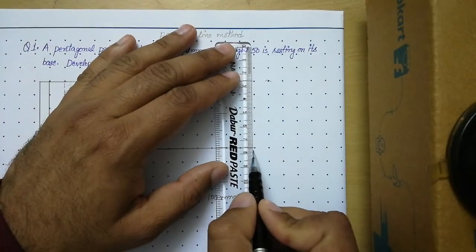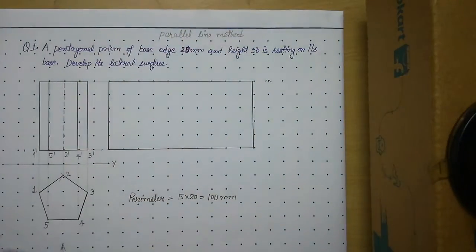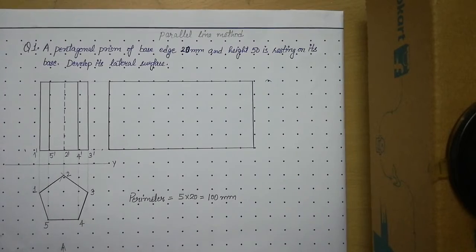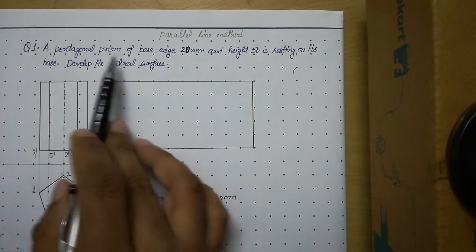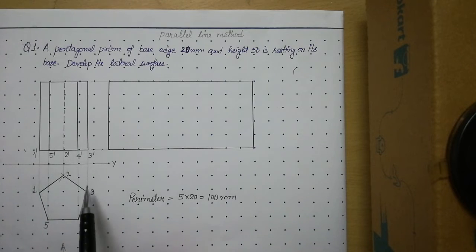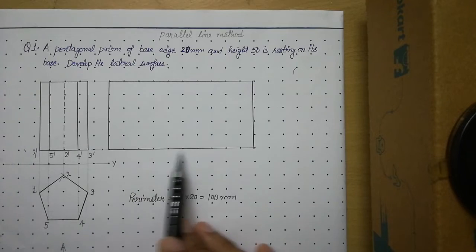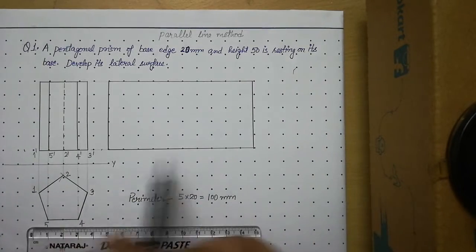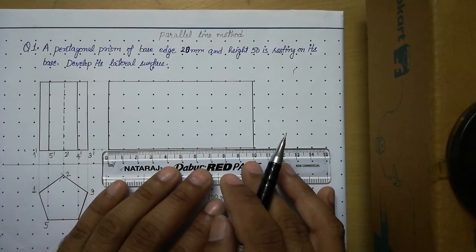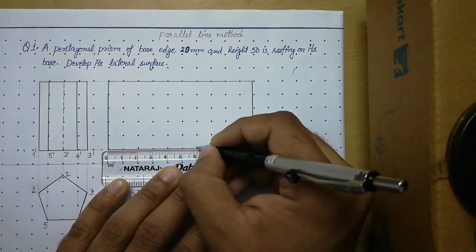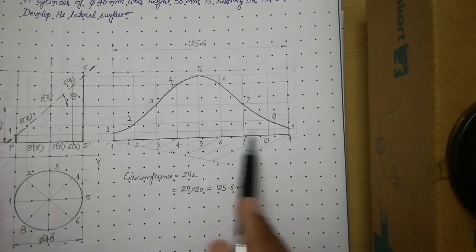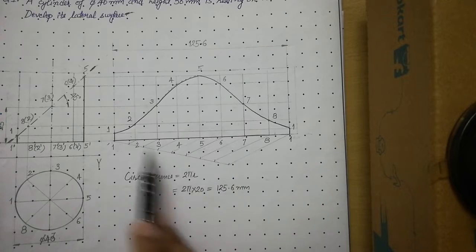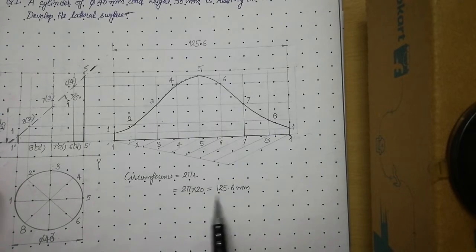In the case of a cylinder we divided the sheet into eight equal parts using generators, but for prisms we use edges instead. There are five edges, each of 20 mm, so divide the sheet into five equal parts: 100 ÷ 5 = 20 mm each. This step of using the arc method is not required for prisms — it is only required for cylinders because the circumference often comes out as a decimal value that cannot be easily measured with a scale.